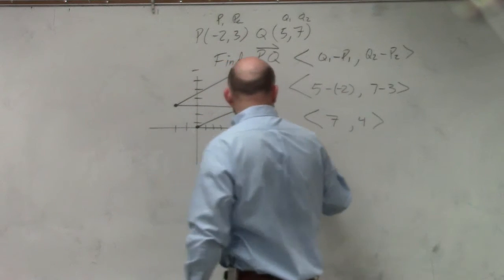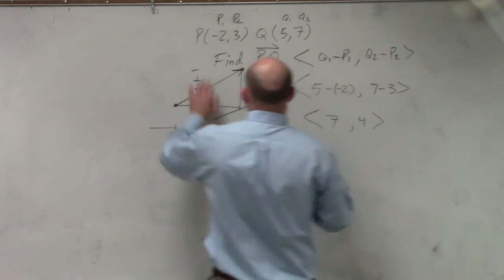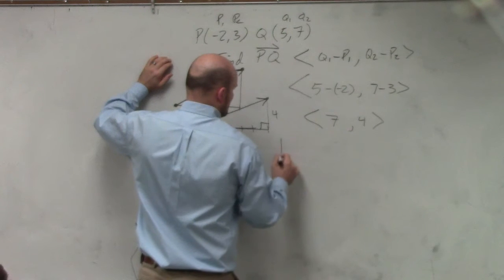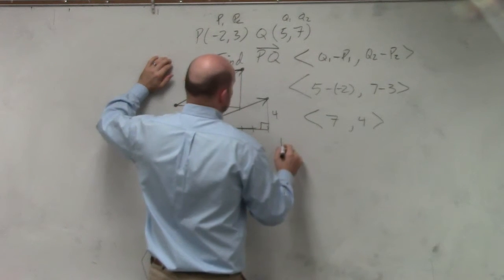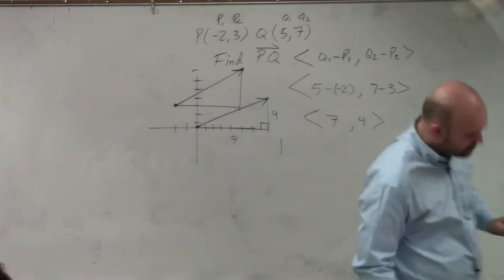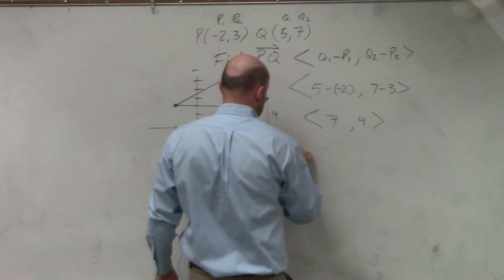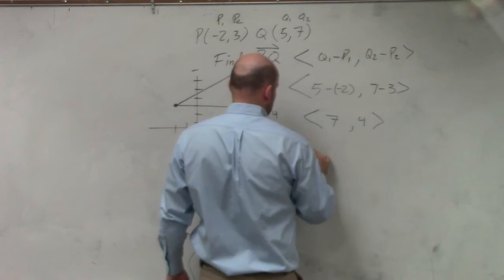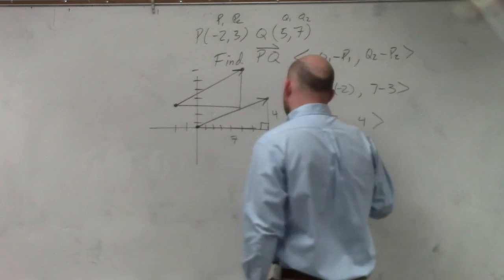So it's basically going to be my magnitude, which we would write as magnitude of my PQ is going to equal to the square root of 7 squared plus 4 squared.